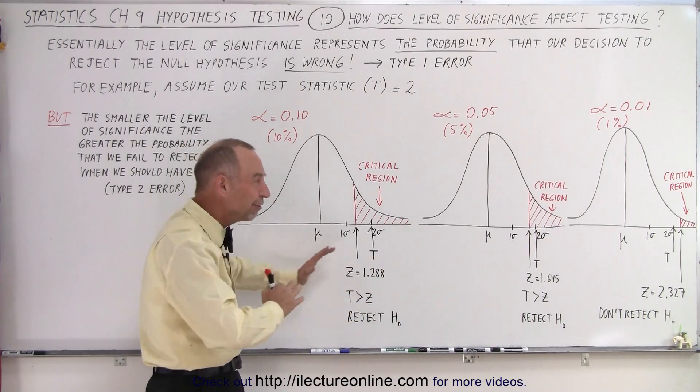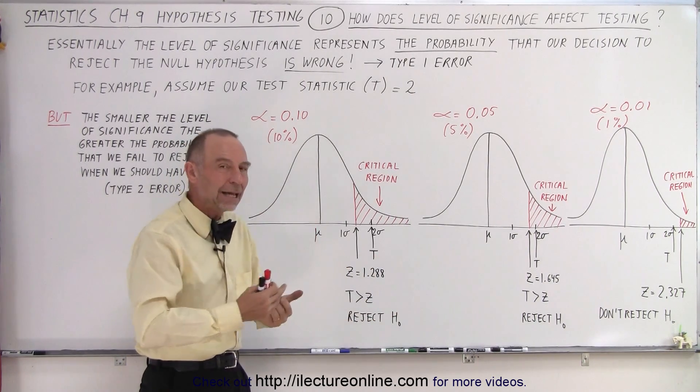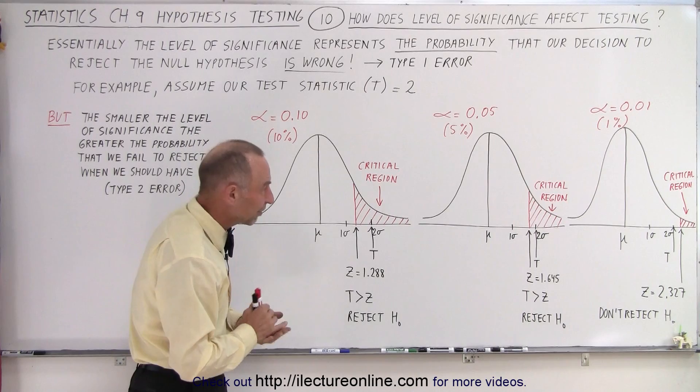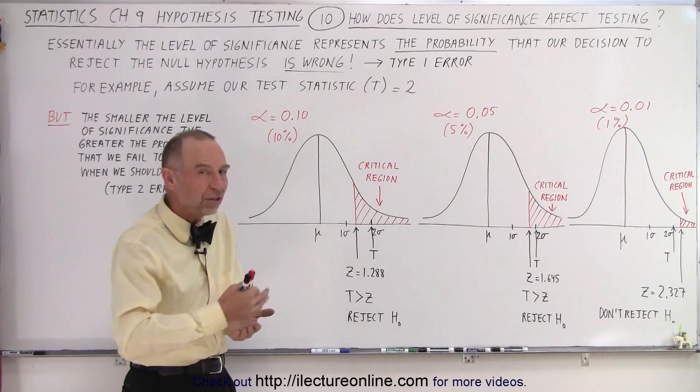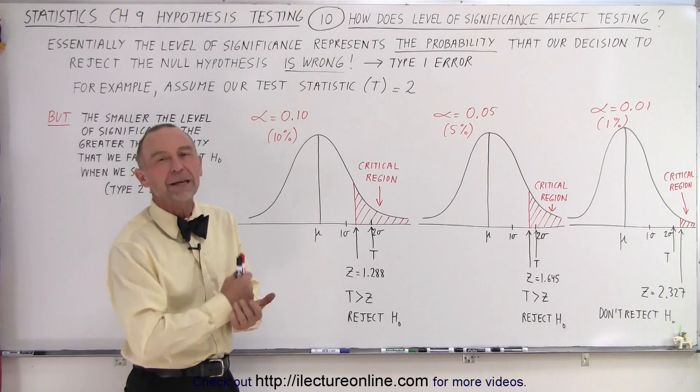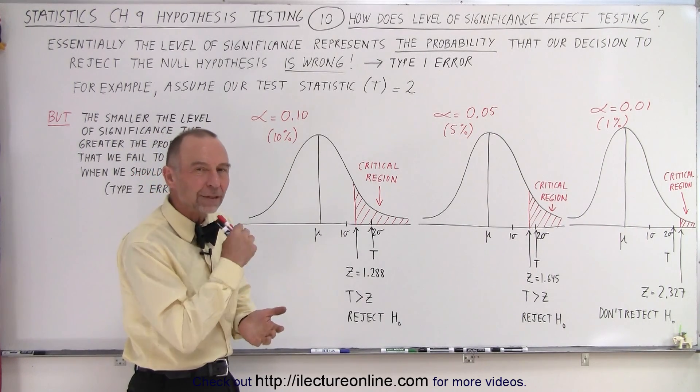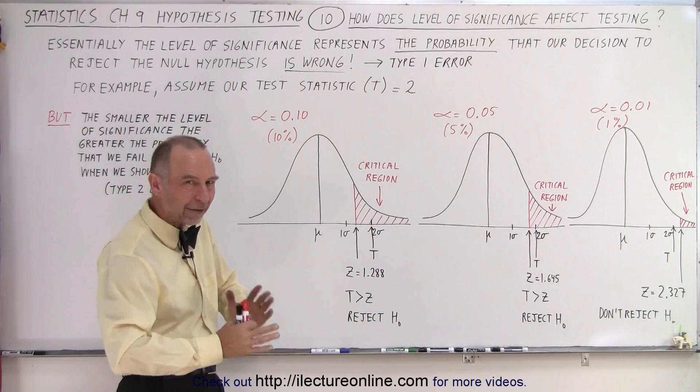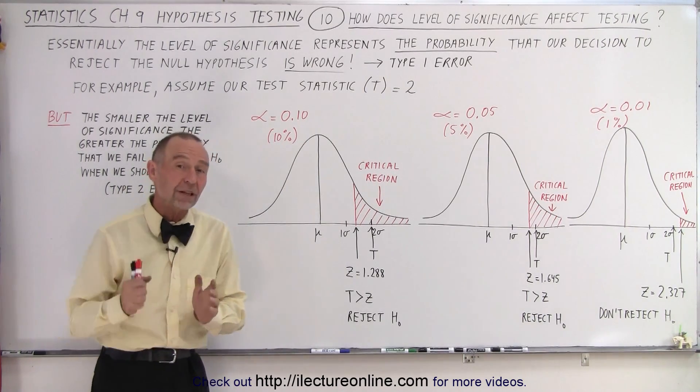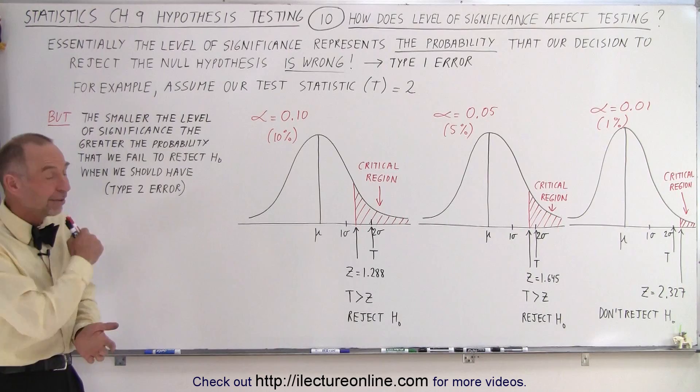Hopefully this gives you a good feel for the meaning and usefulness of the level of significance, and where you want to set it to have a reasonable probability not to make a mistake and to make the right decision. You can't have it all one way or the other way. You have to strike a balance between the two potential errors, and that is how it's done.